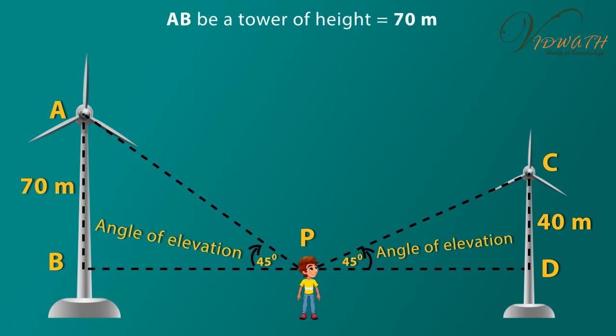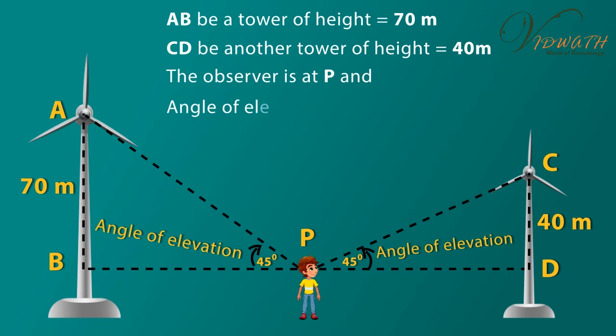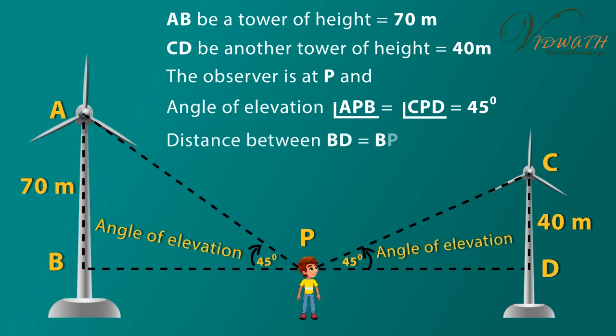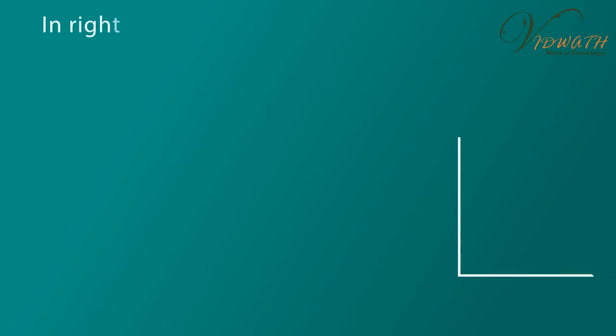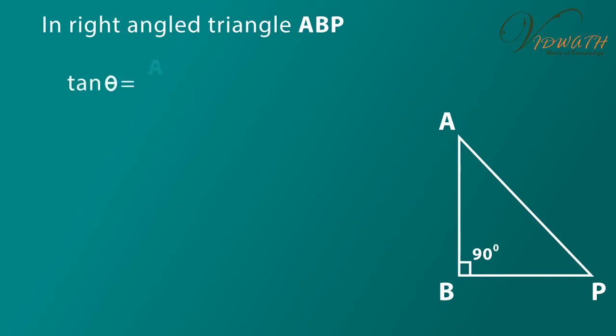Solution: Read the problem carefully. Convert the data into meaningful diagram. Let AB be a tower of height is equal to 70 meter. CD be another tower of height 40 meter. The observer is at P and angle of elevation angle APB is equal to angle CPD is equal to 45 degree. Distance between BD is equal to BP plus PD. In right angled triangle ABP, tan theta is equal to AB by BP. Then substituting the value and simplify. Therefore, tan 45 degree is equal to 70 by BP.